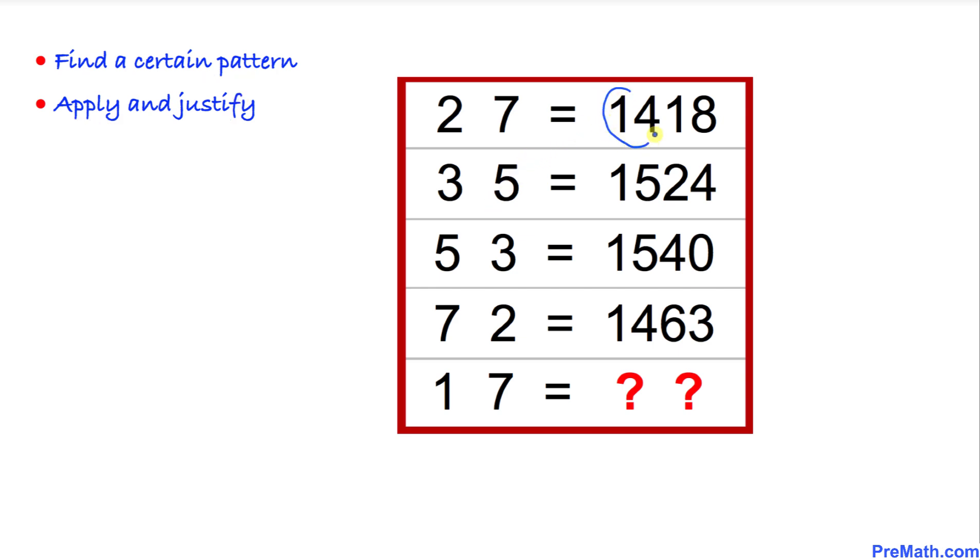these first two digits are just the product—the multiplication—of these two numbers. 2 times 7 is 14. 3 times 5 is 15. 5 times 3 is 15 again.